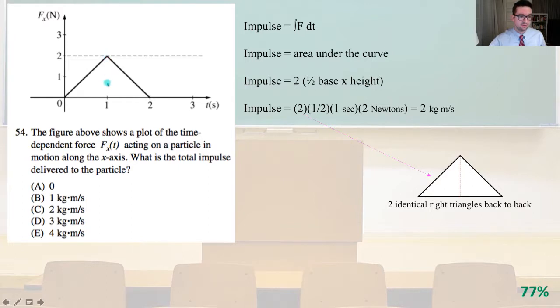We can break this down into two triangles, one on the left side and one on the right side. It's two identical right triangles back to back. The impulse equals two times the area of the triangles, two times 1/2 base times height. The impulse equals 2 times 1/2 times 1 second times 2 newtons equals 2 kilogram meters per second. That is answer C.